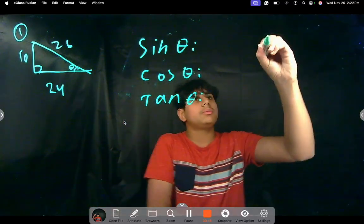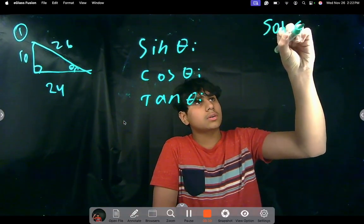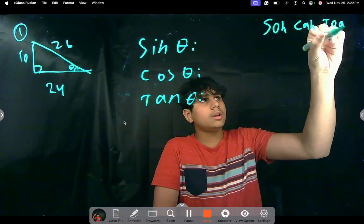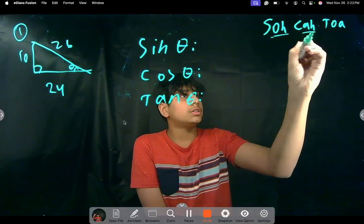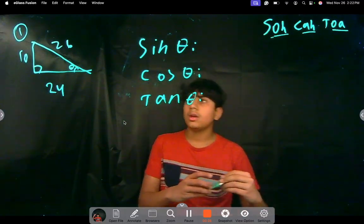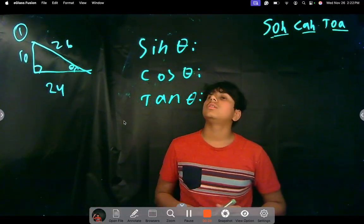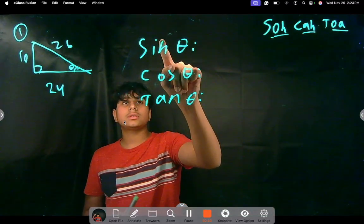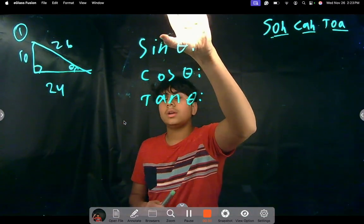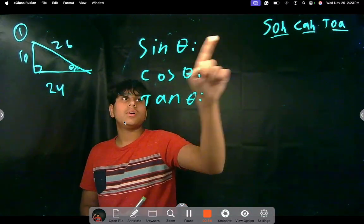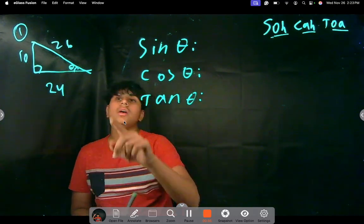We're going to use our abbreviation SOH-CAH-TOA, which tells you sine is opposite over hypotenuse, cosine is adjacent over hypotenuse, and tangent is opposite over adjacent. That's what we're going to use to solve these. So what is sine theta going to be? Sine starts from theta and then we go opposite over hypotenuse.